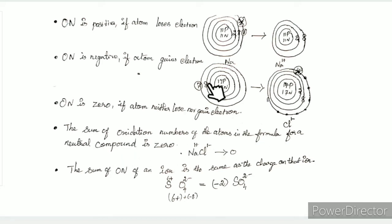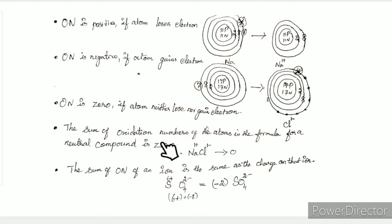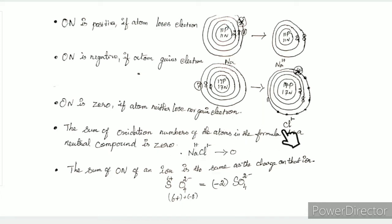For example, sodium and chlorine form sodium chloride. The sum of oxidation numbers is zero: Na is +1, Cl is -1, so +1 + (-1) = 0.